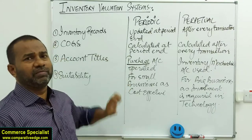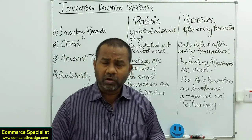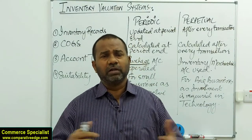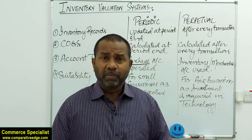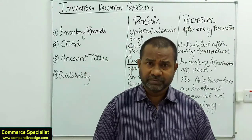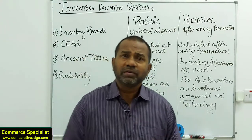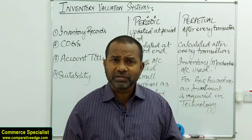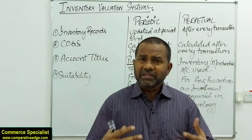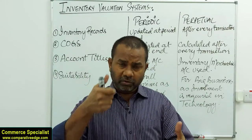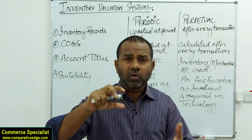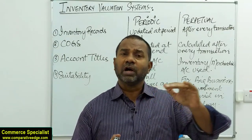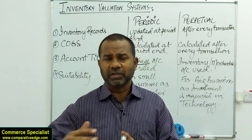Fourth, suitability: the periodic system suits small businesses, like a small grocery store where the owner buys and sells and does the totals at period end. For bigger businesses you need different people and investment in technology. Large supermarkets like Walmart use barcode readers at cash counters — when scanned, the barcode transfers details to the computer and stock accounts are updated automatically.